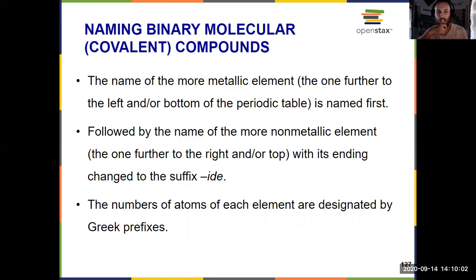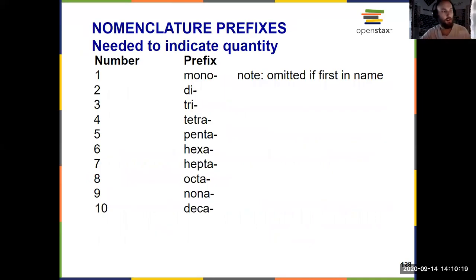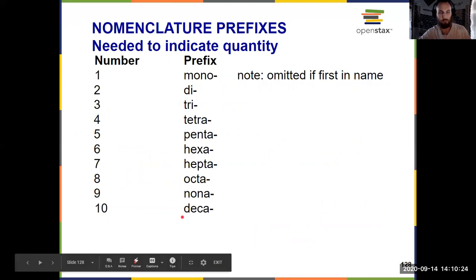We can't just say carbon oxide, because there's a big difference between carbon dioxide — which you breathe in and out daily — and carbon monoxide, which would be toxic to you. That's why we need those Greek prefixes: mono for one, di for two, tri for three, and so on up to 10.